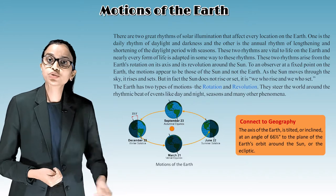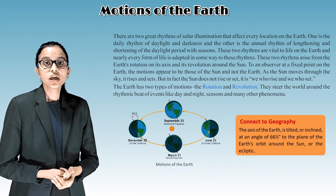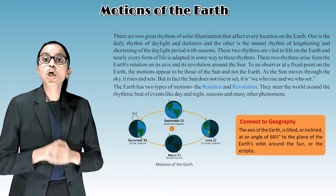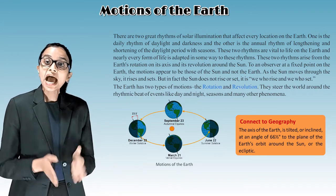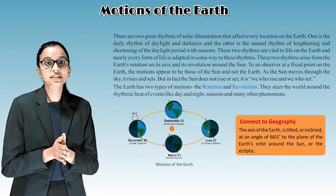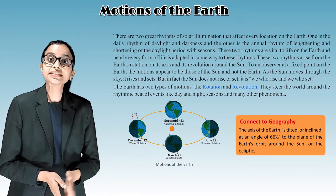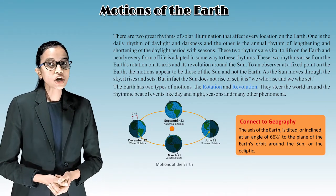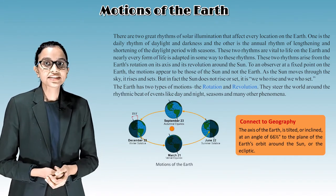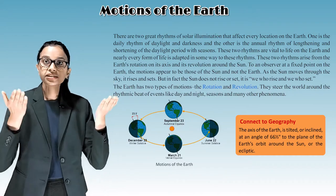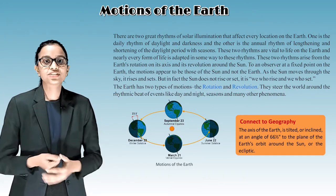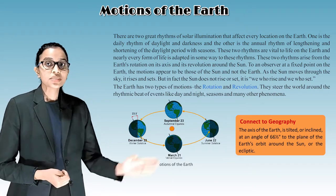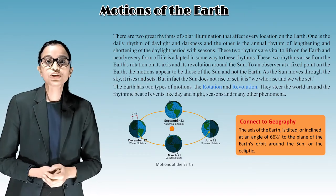To an observer at a fixed point on the earth, the motions appear to be those of the sun and not the earth. As the sun moves through the sky, it rises and sets, but in fact the sun does not rise or set — it is we who rise and we who set. The earth has two types of motions: rotation and revolution.